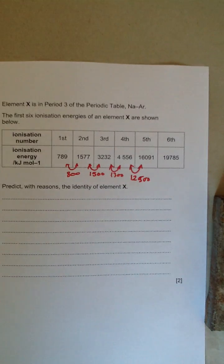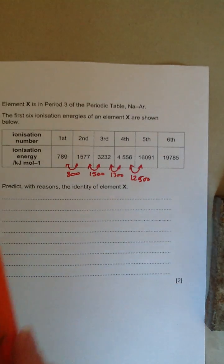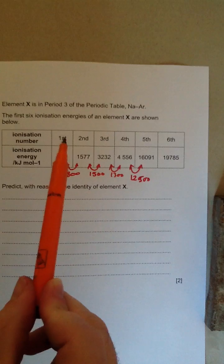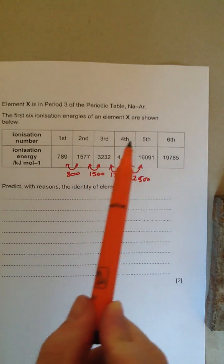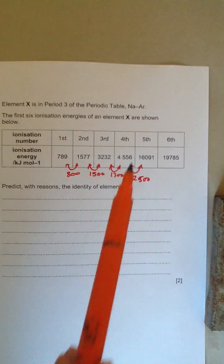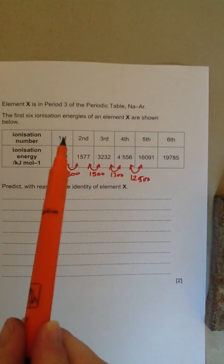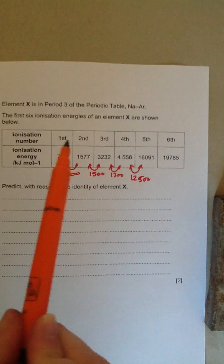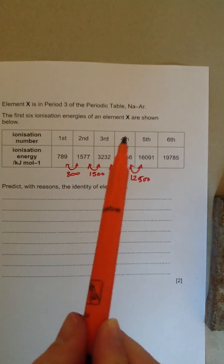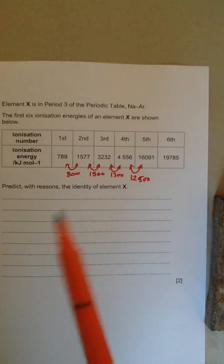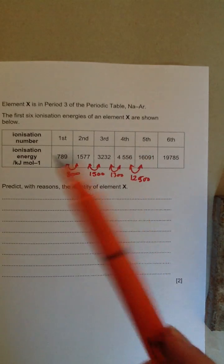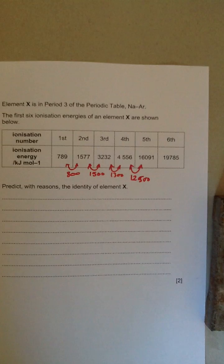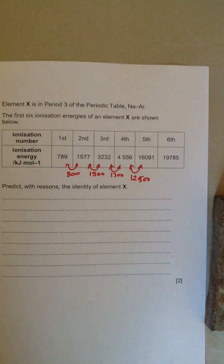What does that mean? Well, it means it's quite easy, relatively, to remove the first, second, third, and fourth electrons, but it's harder to remove the fifth electron. If you can remove the first four electrons relatively easily, that means there must be four electrons in the outer shell. The reason it's really hard to remove the fifth electron is because it's in a shell that's closer to the nucleus. You're breaking into a new shell, so it's harder to remove.